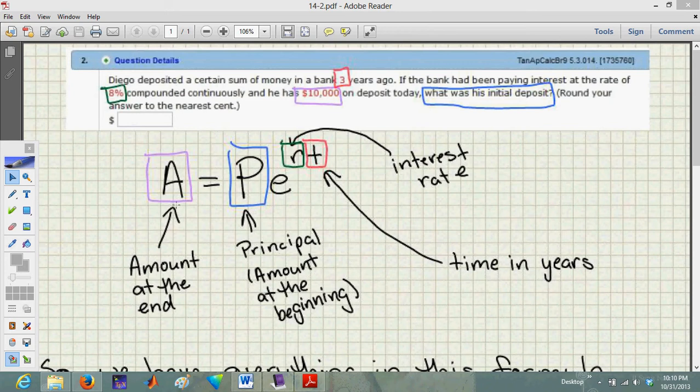The A here, in very non-mathematical terms, is just the amount at the end of whatever time period we're talking about. If they ask what the amount is after a certain number of years, or give you an amount after a certain number of years, that's what goes in for this A. P here, that's the principal, that's the amount at the beginning - the starting deposit in a bank account or the amount of money somebody was making at a specific time in the past. Basically, that's the starting amount.